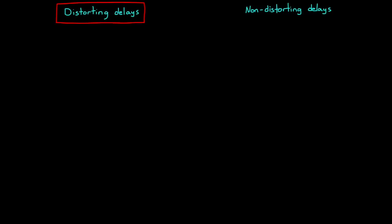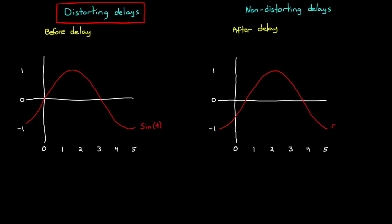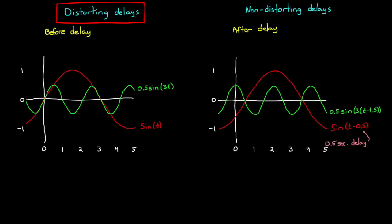Let's start with distorting delays. Signals are distorted when the original shape is altered in some way. In the case of delay, this happens when the time delay is different for various frequencies that make up the signal. For example, let's say that a signal is made up of two distinct frequencies—a rather low frequency at 1 radian per second that gets delayed by half a second when it passes through some process, and a second higher frequency signal at 3 radians per second that is delayed by a second and a half when it passes through the process. Neither of these signal components are distorted, they're just delayed by different amounts.